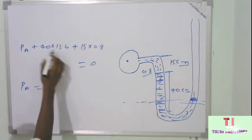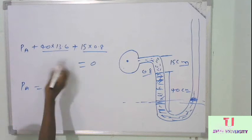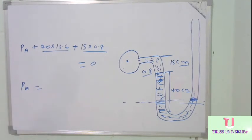So now pressure coming out to be is this and this and this and that will be the negative pressure. So what is this total, we can calculate as 40 multiplied by 13.6, plus 15 multiplied by 0.8.